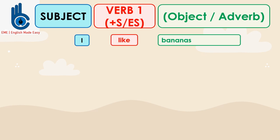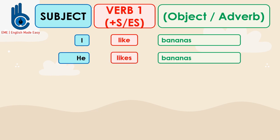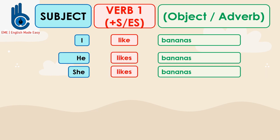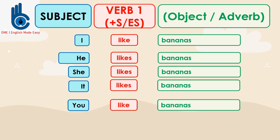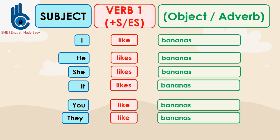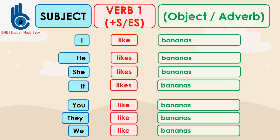The other examples can be: I like bananas. He likes bananas. She likes bananas. It likes bananas. You like bananas. They like bananas. And we like bananas.